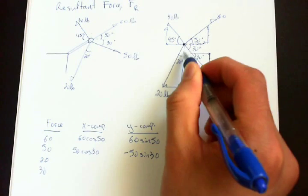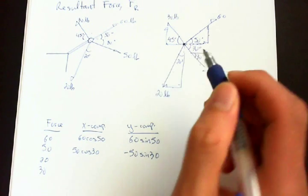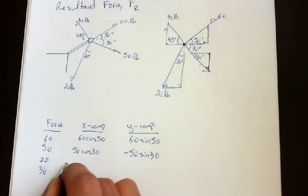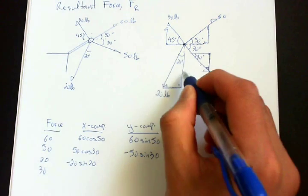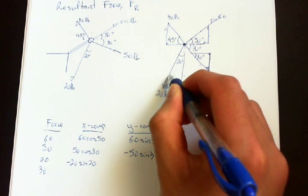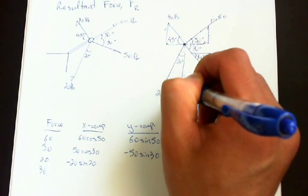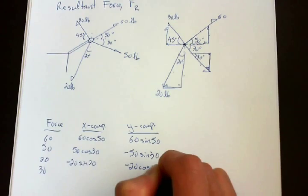For this force, its x-component is opposite over hypotenuse, and it's negative because it's going to the left. So negative 20 sine 20. And its y-component is adjacent over hypotenuse, so it's cosine. And it's also negative because it's going down. So negative 20 cosine 20.